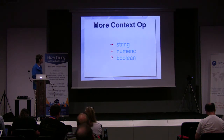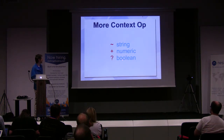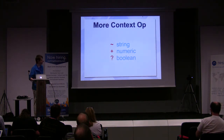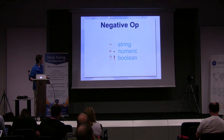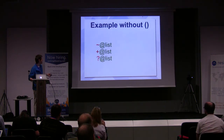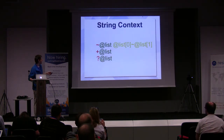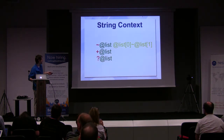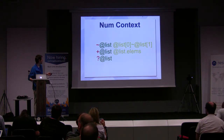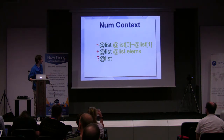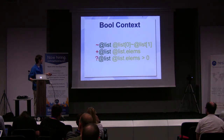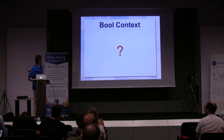There are some new contexts that didn't exist in Perl 5 in this form. String, numeric, and boolean context. The numeric and boolean can also have their opposites. For instance, you can put them in front of a list: with tilde you get the string content concatenated, plus gives you the number of elements — we have no more 'length' — and the question mark asks if there is anything in the list.